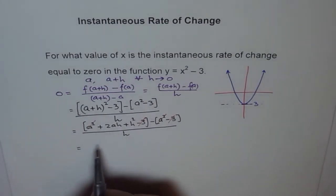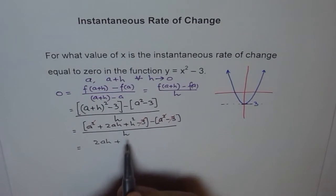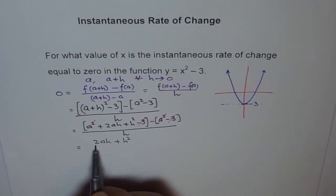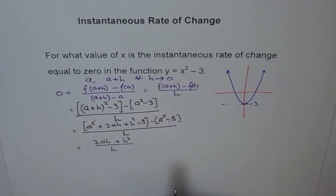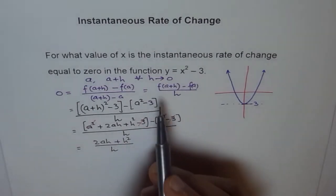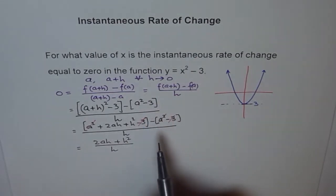So we are left with 2AH plus H square over H. Now since H square is very small, we can neglect it. Because H is very, very small, it's close to 0. Think a term like 0.001 and if it is 0.001 square, then it will be what? By 10 to the power minus 6, which is very small. So we can neglect this.